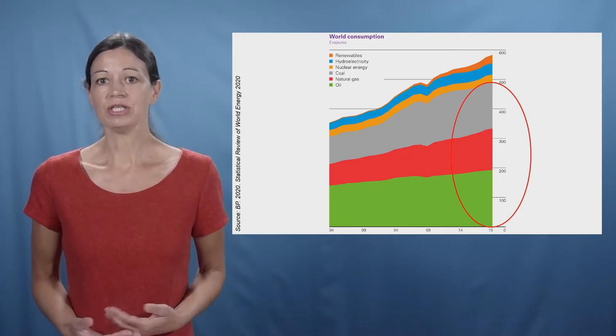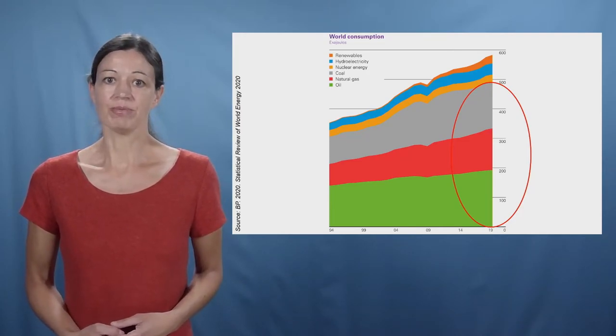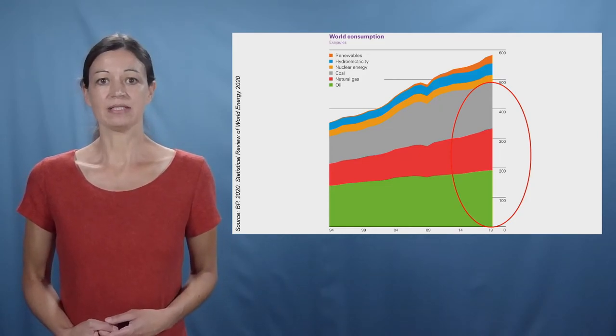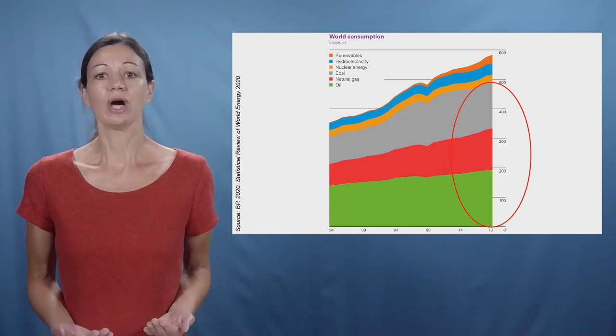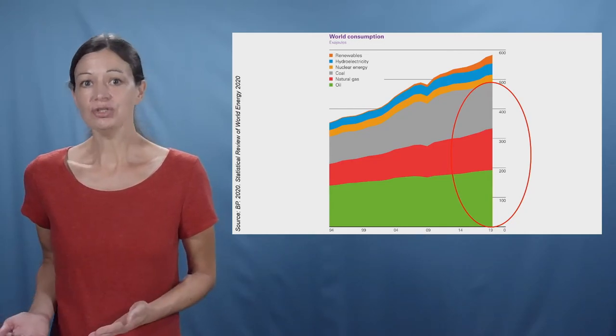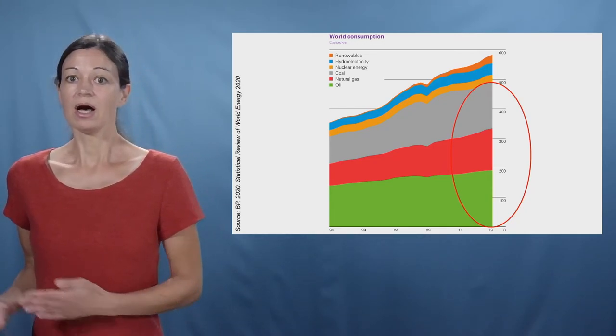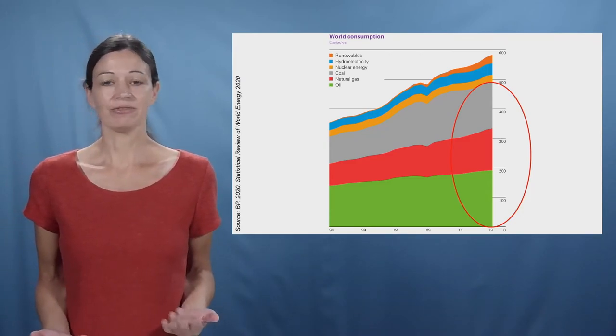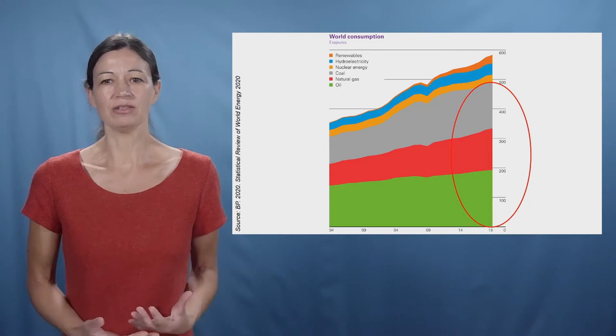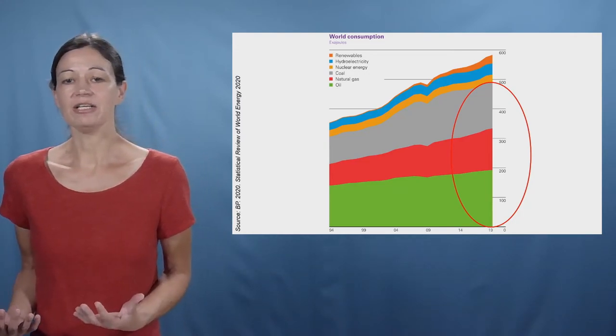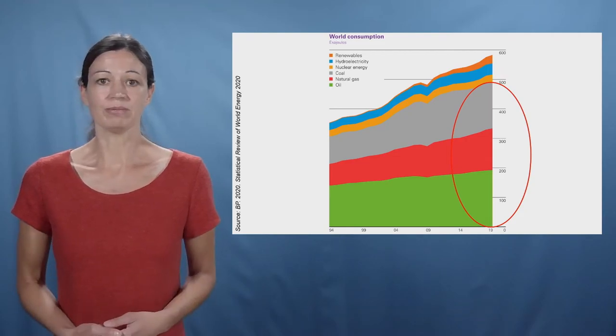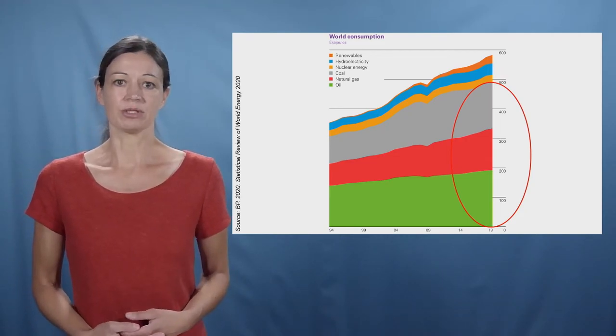If we want to achieve the goal of net zero emissions in the second half of this century, we need to replace those sources with low carbon alternatives, reduce our energy consumption, or capture the emissions. This is a massive challenge that involves technological innovation, large-scale infrastructure investment, and a fundamental change of not only production, but also consumption patterns.